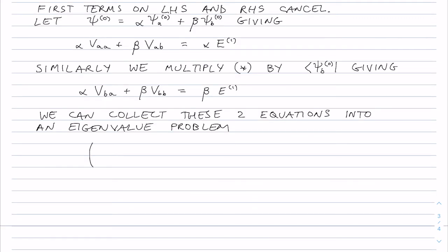And that looks like the first equation V_aa, V_ab, second equation is V_ba, V_bb times alpha beta. So that's the left hand side of those two equations, and the right hand side of those two equations is E1 eigenvalue alpha beta.